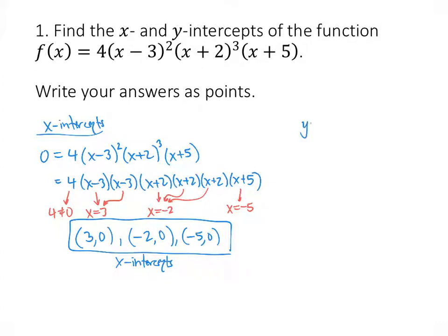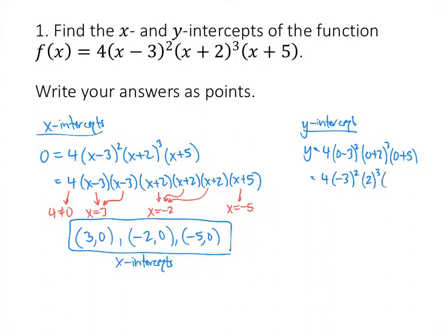The y-intercept is the point where x equals 0. So y equals 4 times (0 minus 3) squared times (0 plus 2) cubed times (0 plus 5), which gives us negative 3 squared times 2 cubed times 5. When we multiply all that out, we get 1,440. So the y-intercept is (0, 1440).